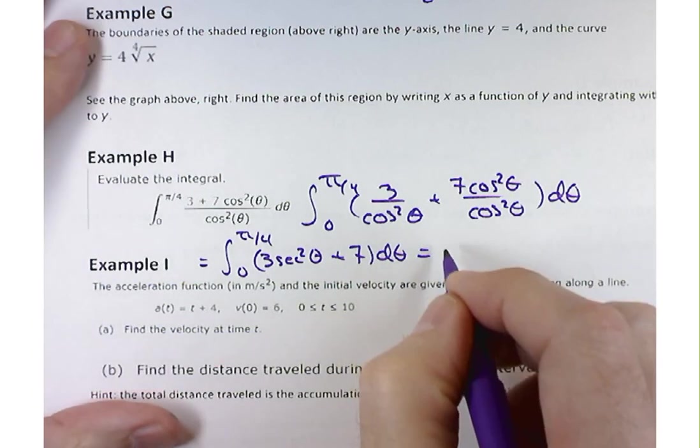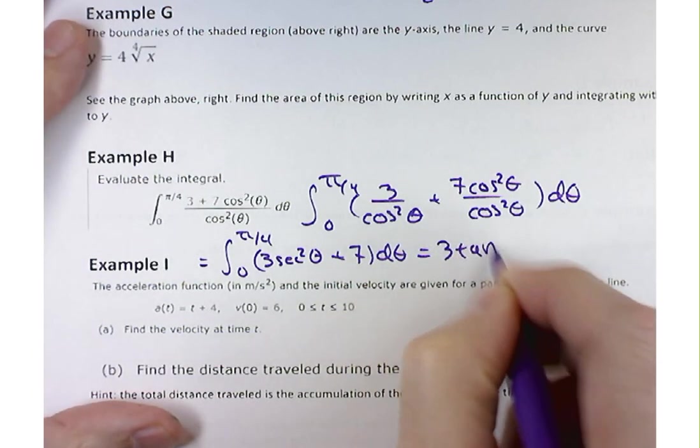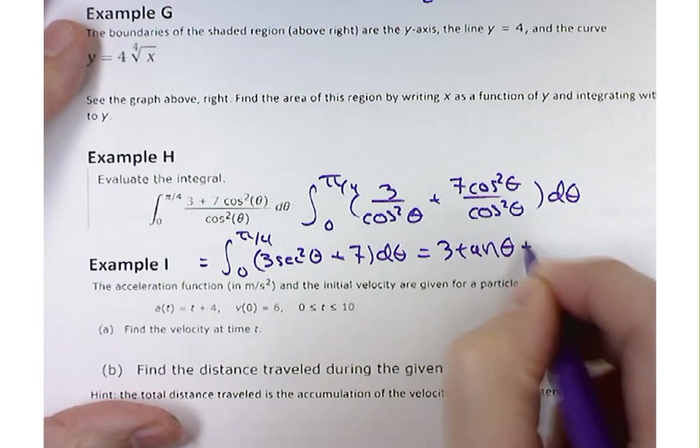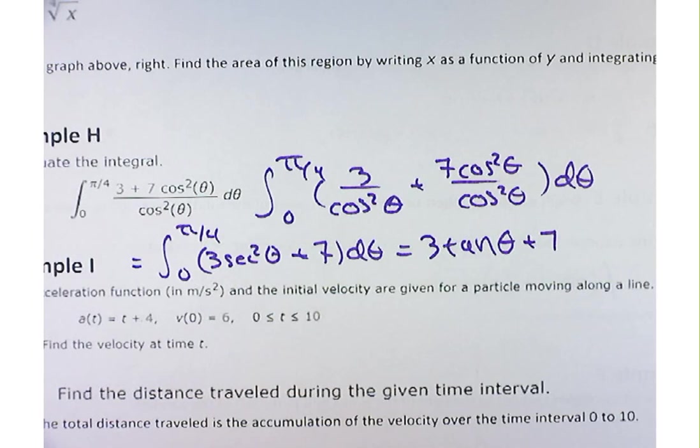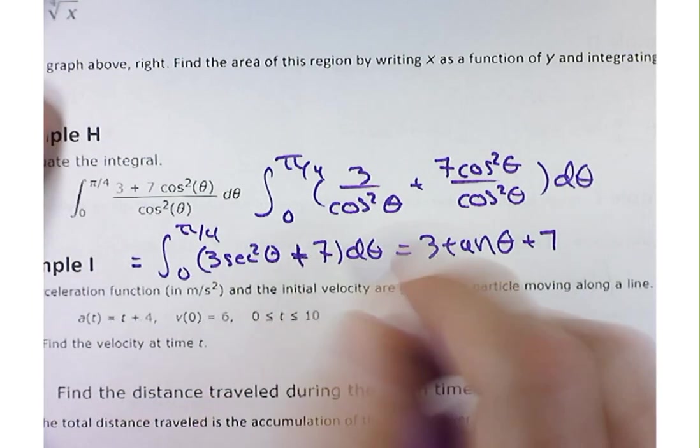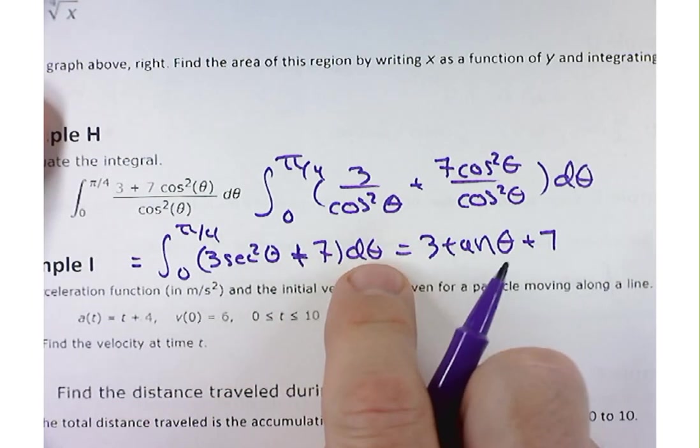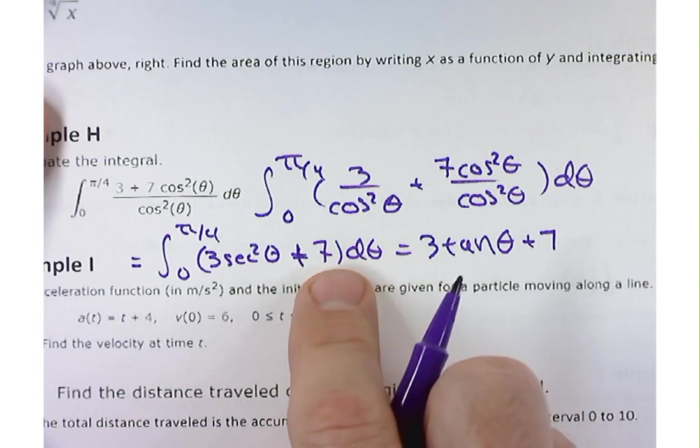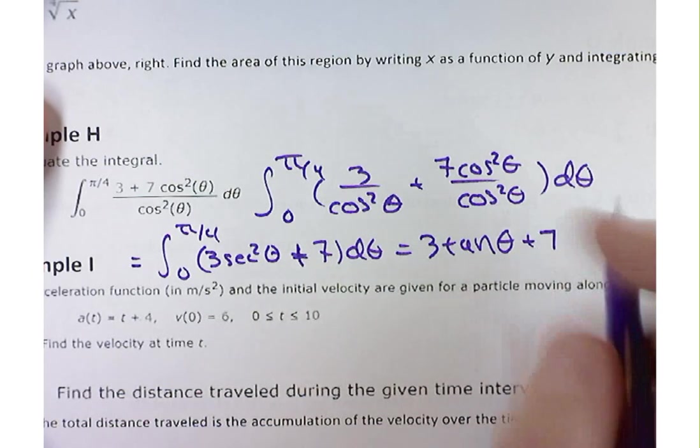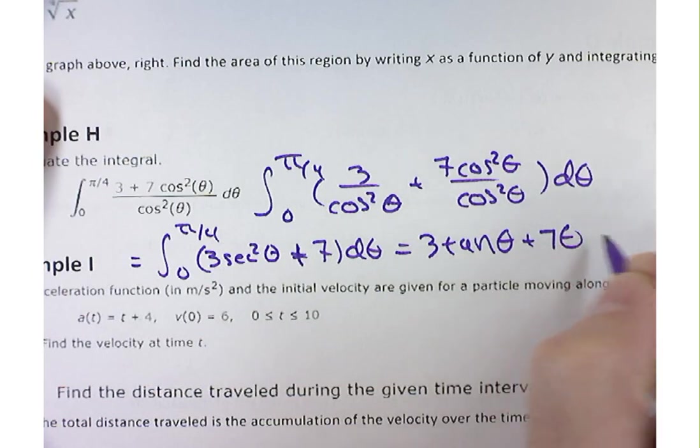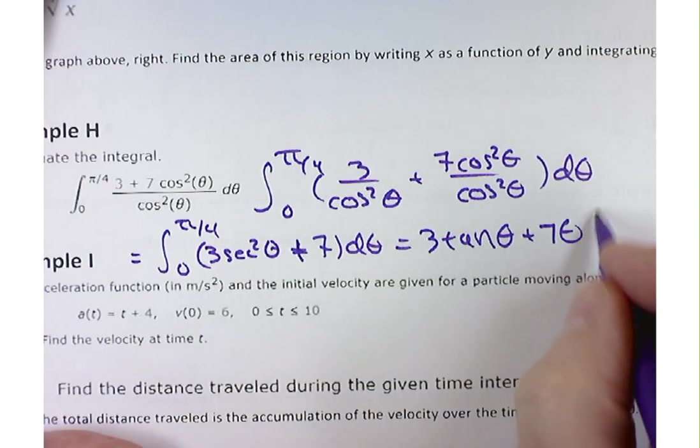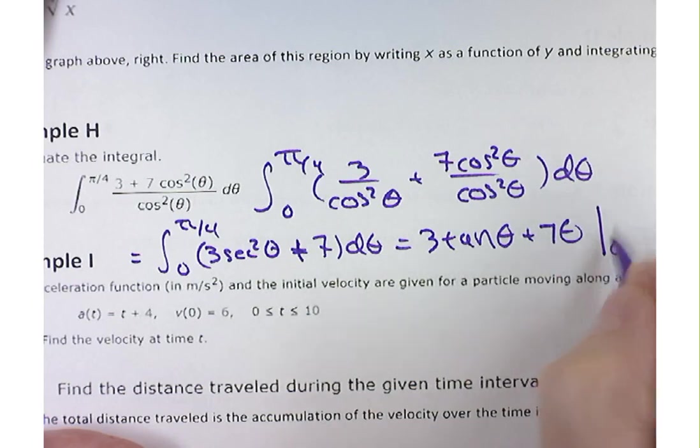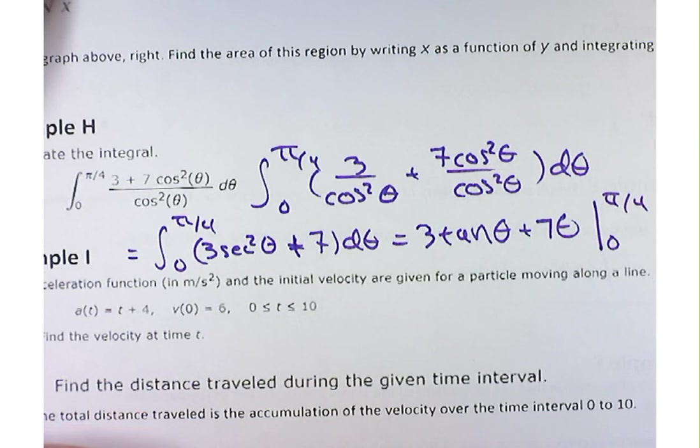So this is going to be 3 times tangent of theta plus, what's the antiderivative of this? Not 7x. 7 theta. That's why it's important to write this variable here because if I was integrating with respect to x, I'd get 7x. But I'm integrating with respect to theta. I don't need the plus c here. Why not? It would subtract out if I put it in, so I won't bother with that.